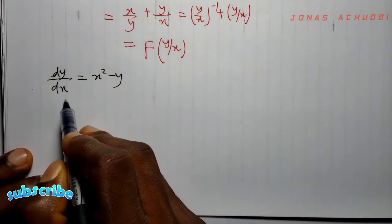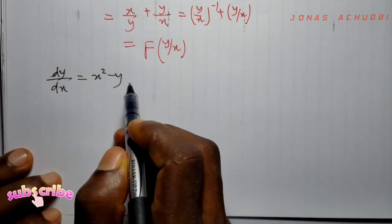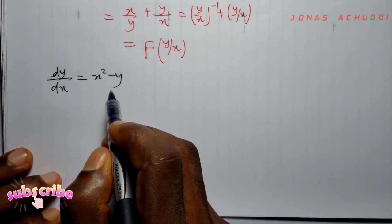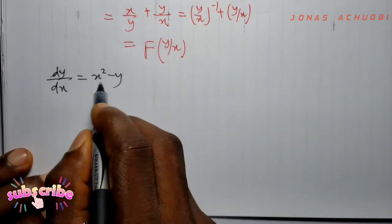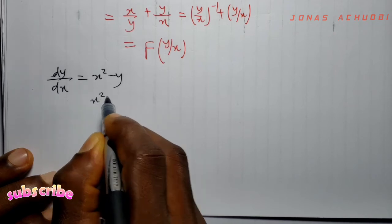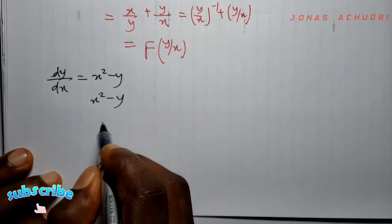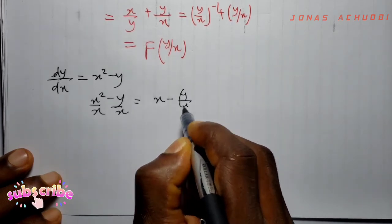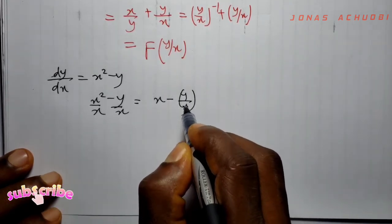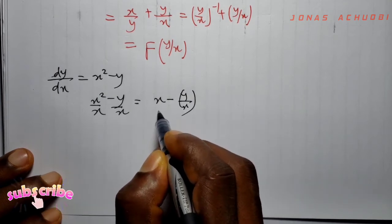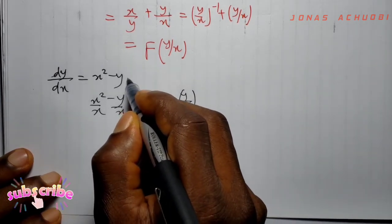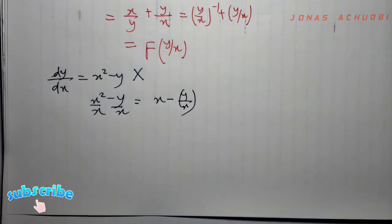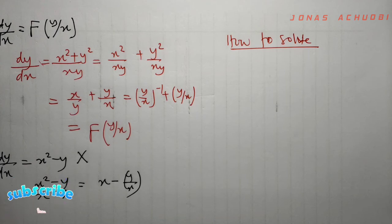The second problem: dy/dx = x² − y. Let us see if we can write the right-hand side as some function of y/x. If we divide through by x, we get x − y/x. The second term has been expressed as y/x, but the first term, x, cannot be expressed as such. Hence, the given first-order ODE is not homogeneous.